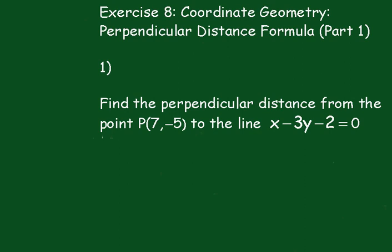Exercise 8, Coordinate Geometry, Perpendicular Distance Formula, Part 1. Number 1: Find the perpendicular distance from the point P(7,-5) to the line x-3y-2=0.